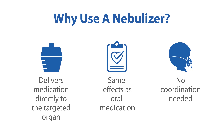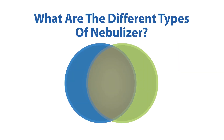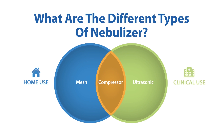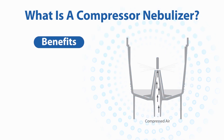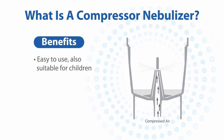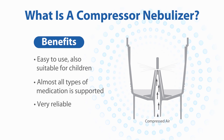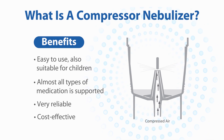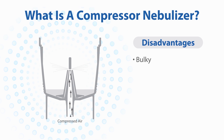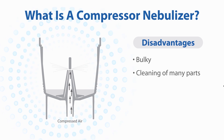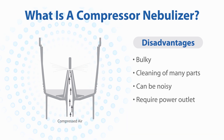Unlike an inhaler, using a nebulizer requires no breathing coordination, which makes it especially suitable for the elderly and children. There are different types of nebulizers — choose one that is suitable for you. The compressor nebulizer uses compressed air to generate the aerosols. It is easy to use, supports many types of medication, reliable, and affordable.